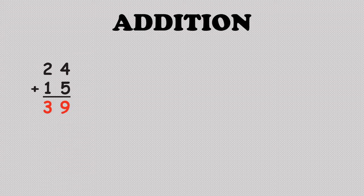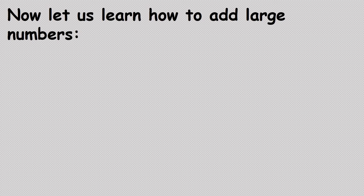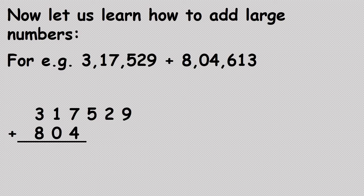We already know that the numbers we add are called addends, and the answer we get after adding the numbers is called the sum. Now let us learn how to add large numbers. For example, let us add the number three lakh seventeen thousand five hundred and twenty-nine with eight lakh four thousand six hundred and thirteen. To add large numbers, we follow the same steps as we do for small numbers.